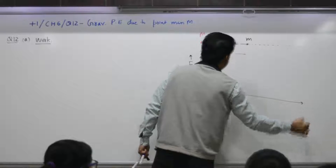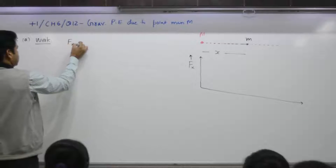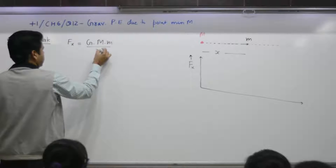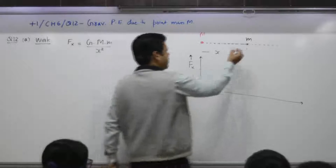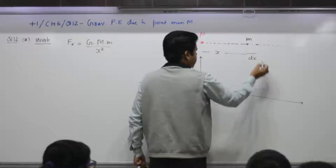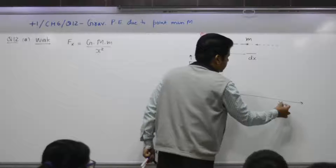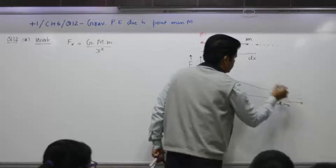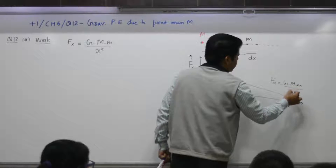The work done gets stored in the form of gravitational potential energy. First, let's see how force varies between the two. F(x) is equal to GMm over x squared. On the F-x graph, force is inversely proportional to x squared.